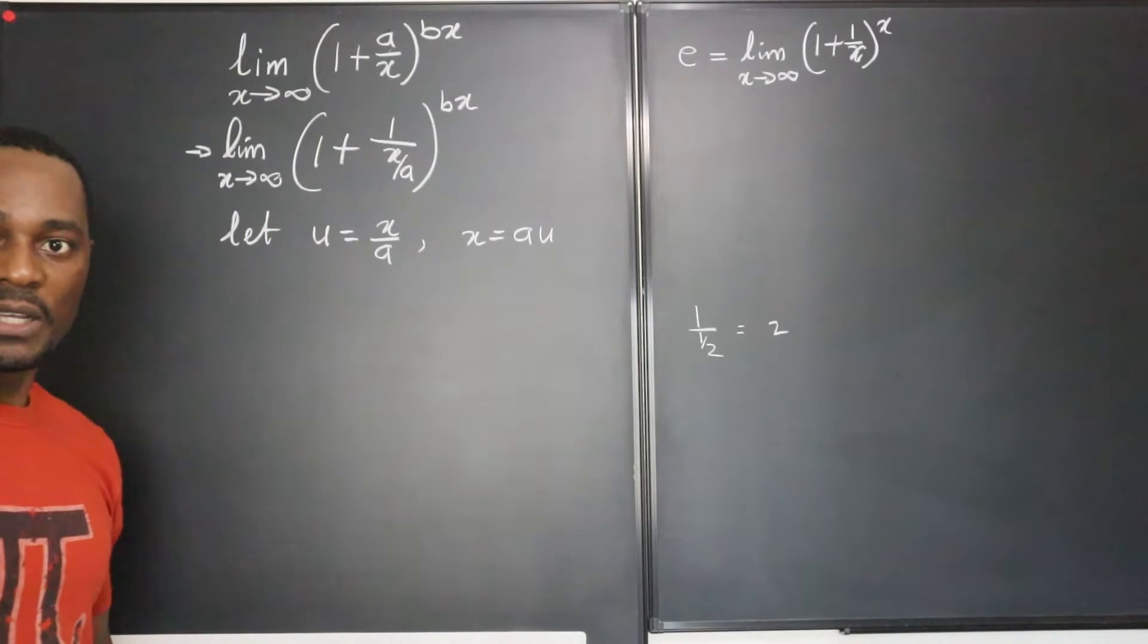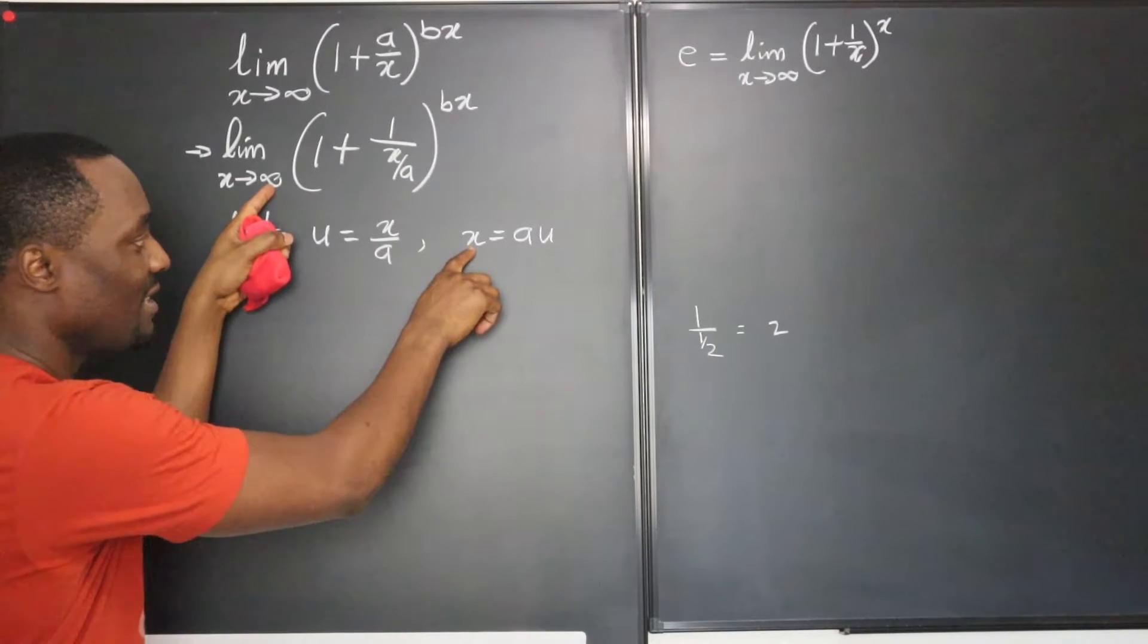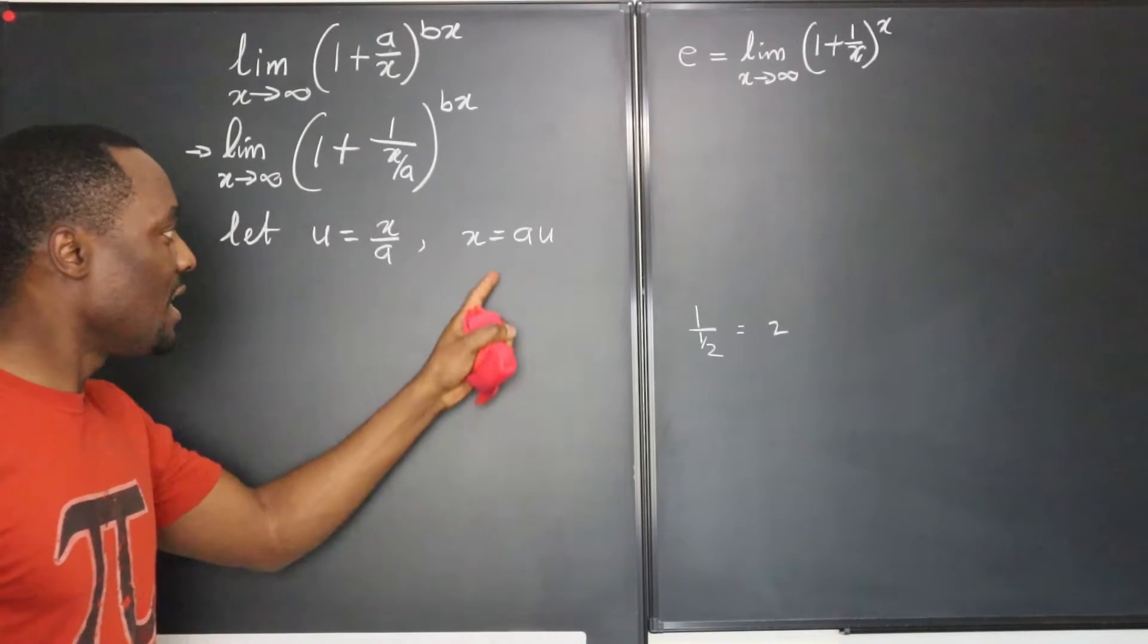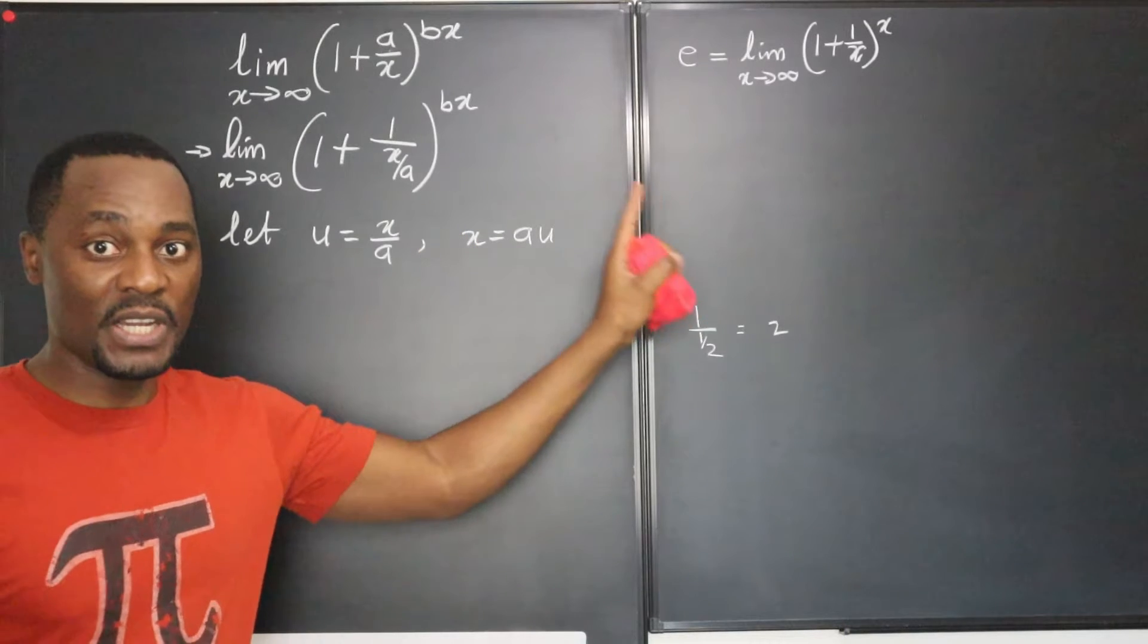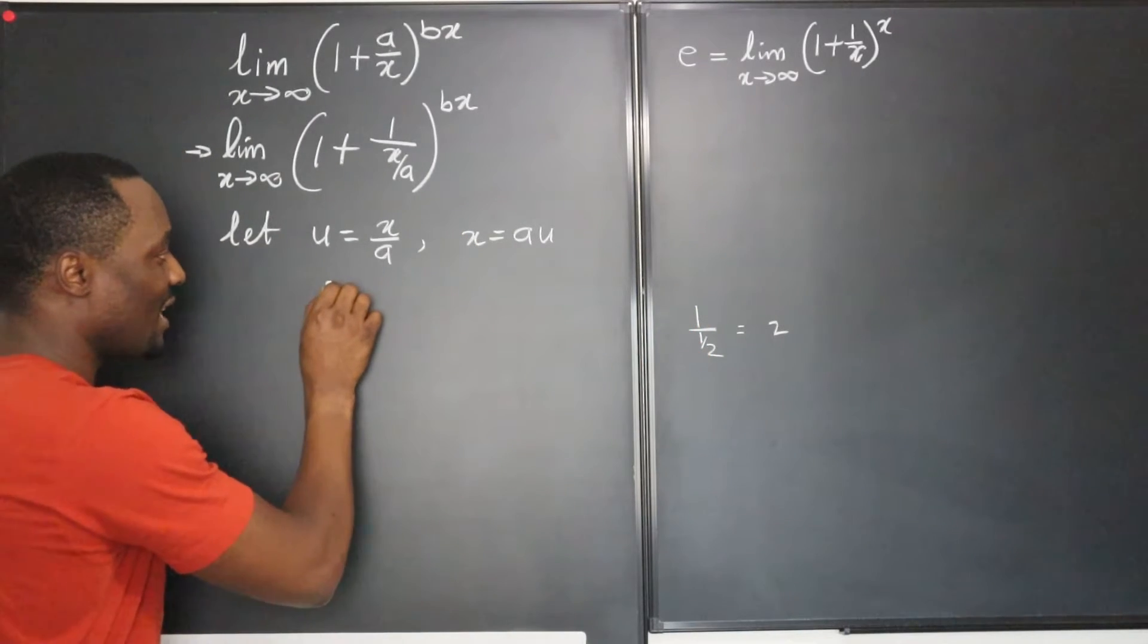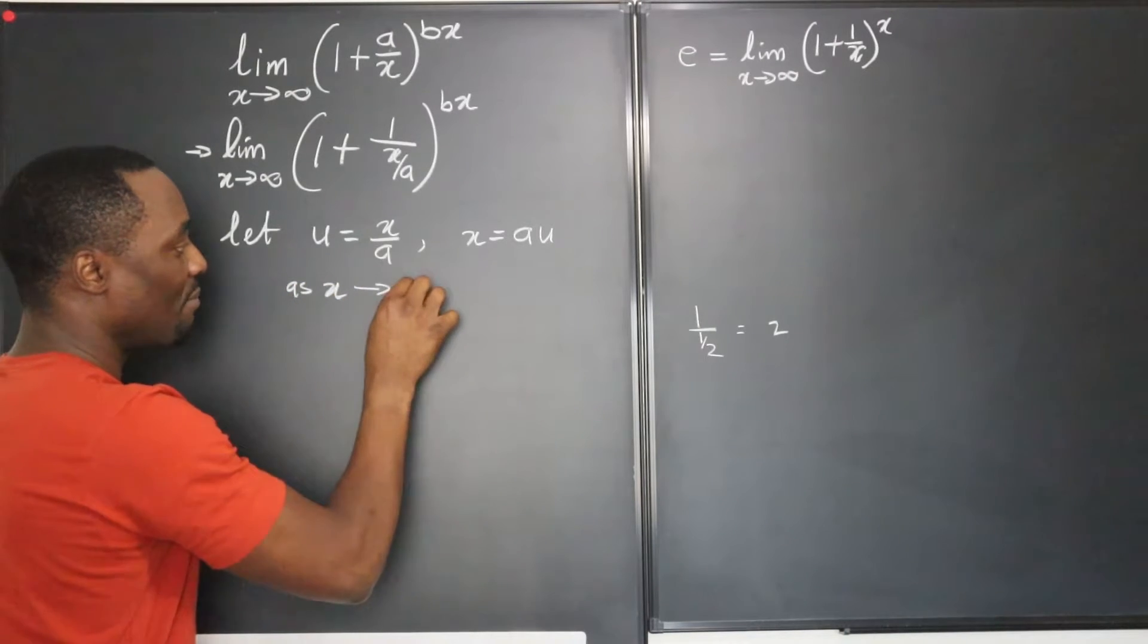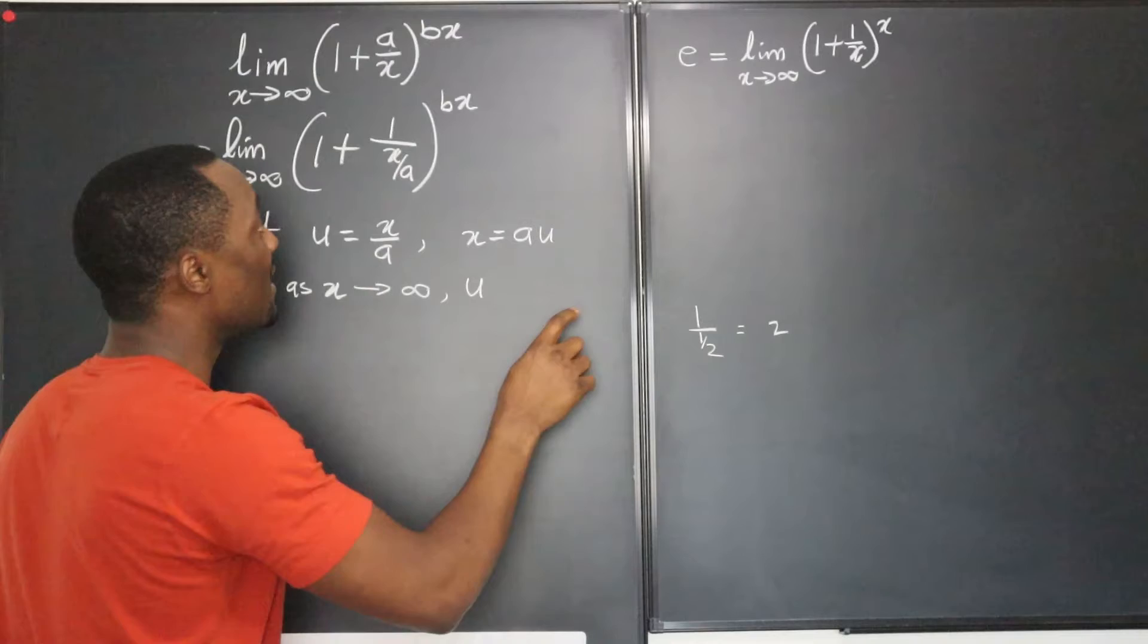Now there's one more thing we need to consider. As x approaches infinity, as this approaches infinity becomes increasingly large, this expression too will become large and that means u is also approaching infinity.